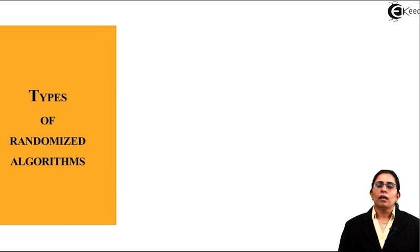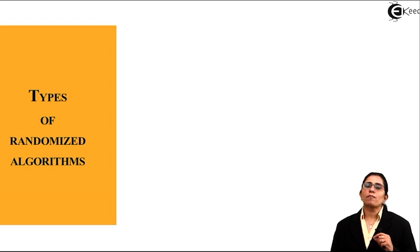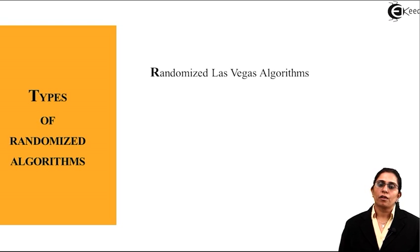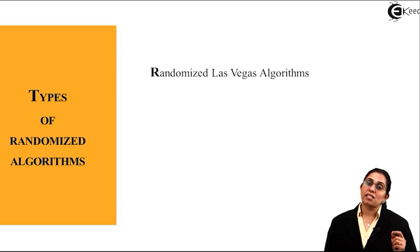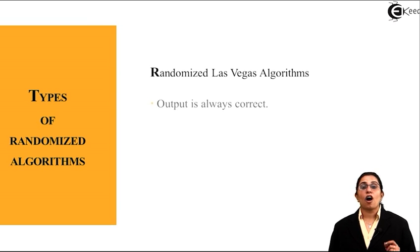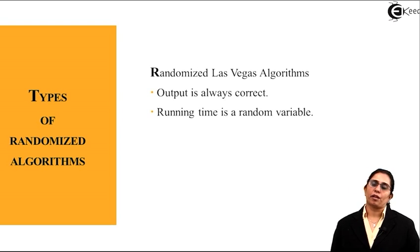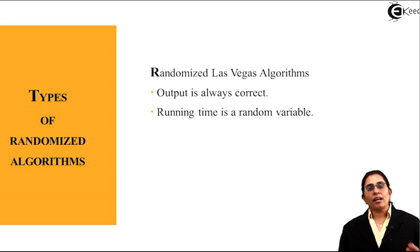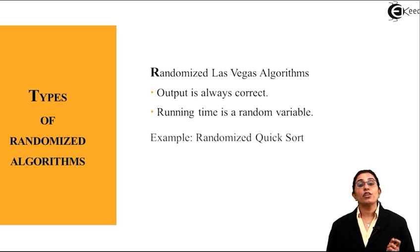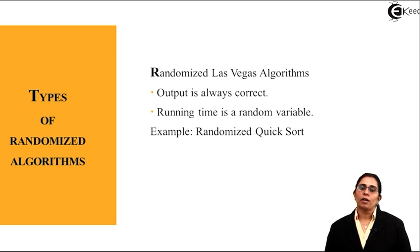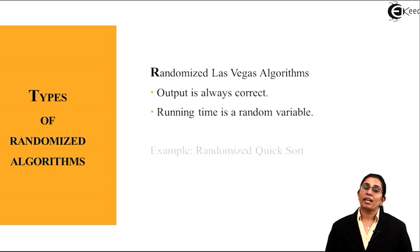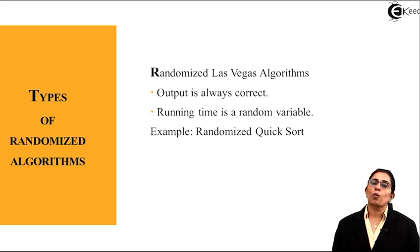Before that we will have a look at the names of randomized algorithms. The first one is a Las Vegas algorithm. It has significance that its output is always correct and running time is a random variable. When running time is a random variable for the Las Vegas algorithm, the output is always correct. An example of it is randomized quicksort.